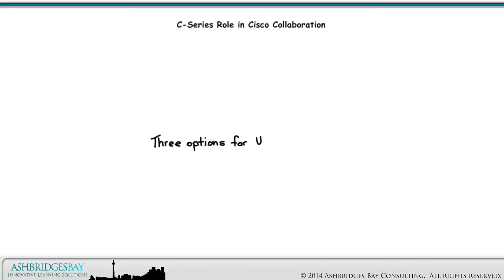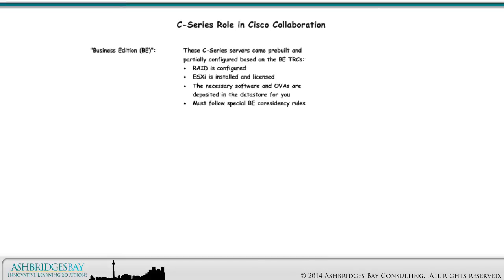There are three options for UC on C-Series. The first is Business Edition, or BE. These C-Series servers come pre-built and partially configured based on the BE TRCs. RAID is configured, ESXi is installed and licensed, and the necessary software and OVAs are deposited in the data store for you. You must follow special BE co-residency rules. Cisco BE servers are super easy to deploy, are fully supported, and provide guaranteed performance.